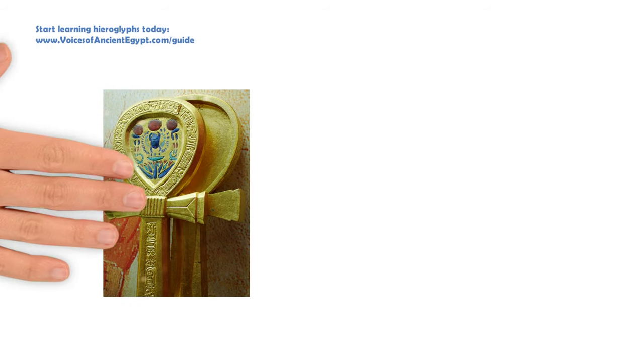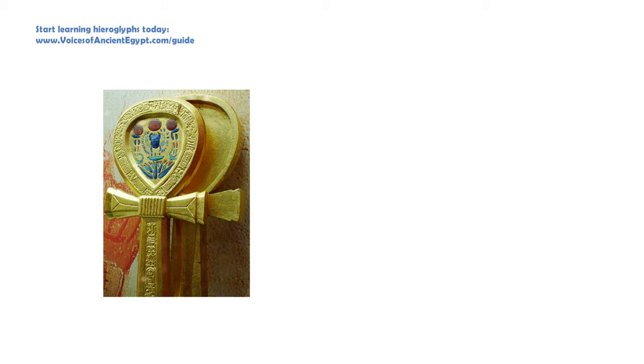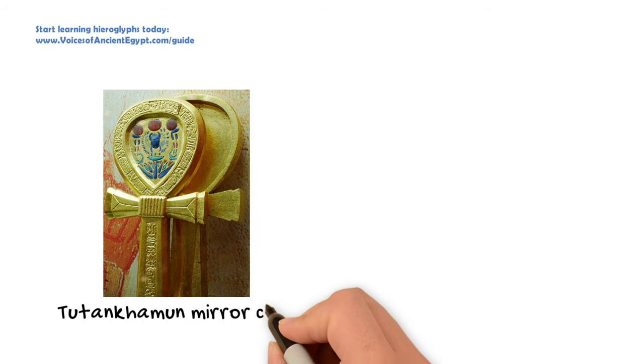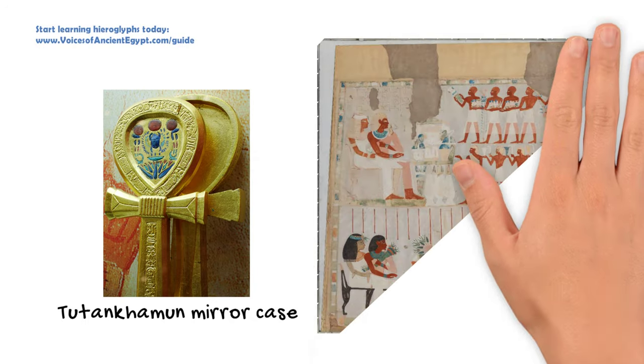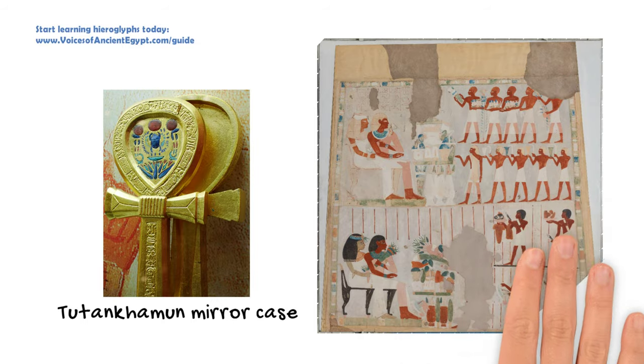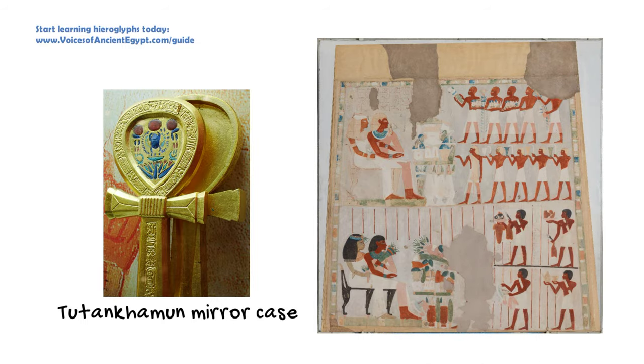In any case, it is used for multiple different words, not just the most common one known today, which are words related to life. In addition to sandal strap, it's also the word for mirror — probably a play on the fact that you're reflecting the person in it, and that this has some relation to the idea of life. It's also a name for a particular type of floral bouquet, especially one given to the dead.